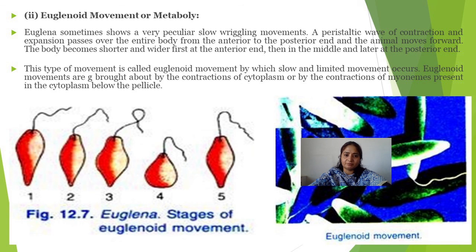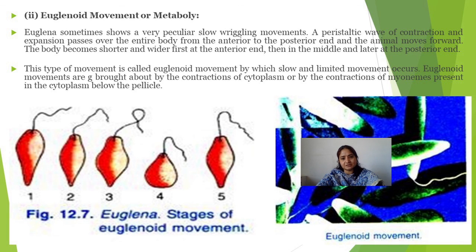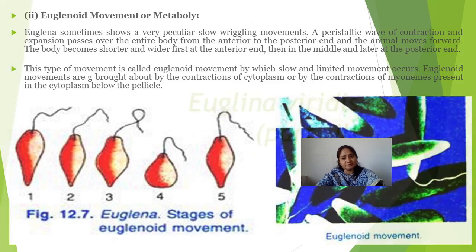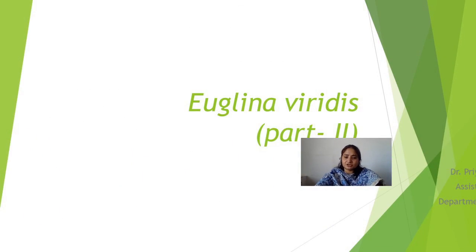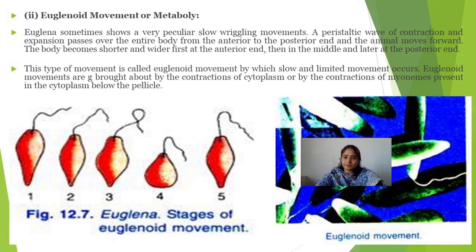Euglenoid movement is brought about by the contraction of the cytoplasm or by the contraction of myonemes — contractile structures in the body — which are the muscles responsible for euglenoid movement. This is all about the structure and locomotion of Euglena viridis. Thank you.